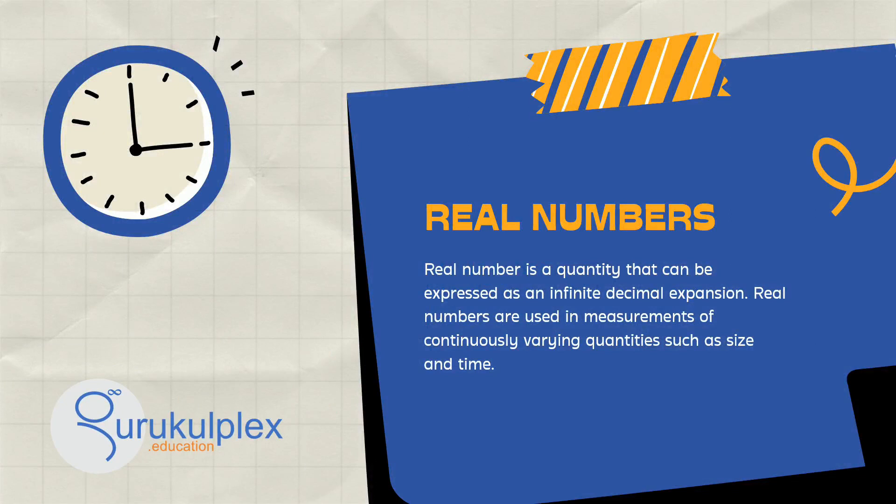Real numbers, such as 3, 2, and pi, enable us to measure and quantify the world around us.